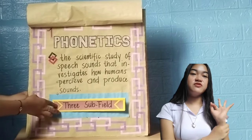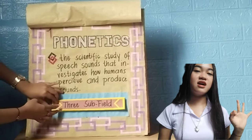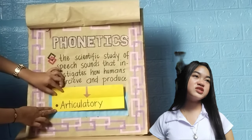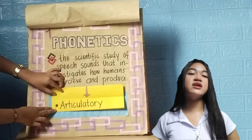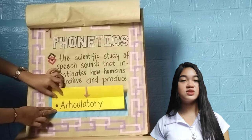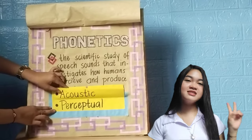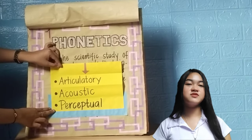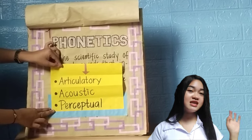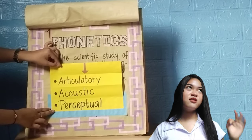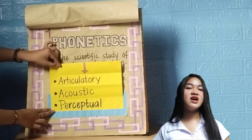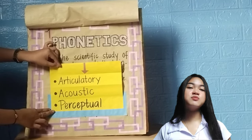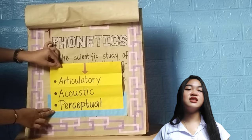There are three subfields of phonetics. The first is articulatory phonetics, which studies how humans produce speech. The second is acoustic phonetics, which studies the physical properties of speech. And lastly, the third subfield is perceptual phonetics, which studies how listeners interpret the acoustic signal in linguistics.